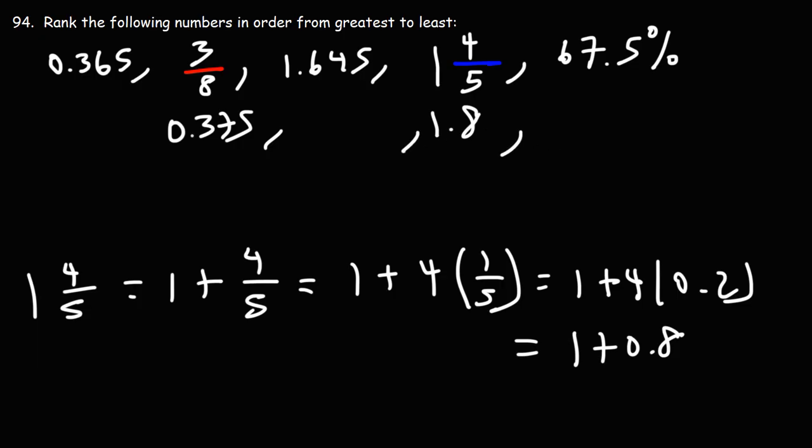67.5%. To convert the percentage to a decimal number, divide by 100 or move the decimal point two units to the left. So this will be 0.675.